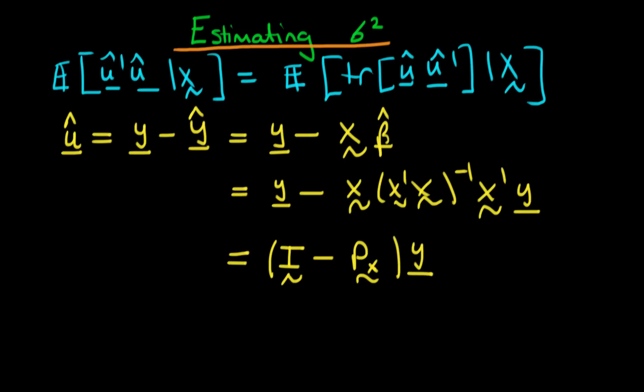If you remember from our videos on the geometric discussion of least squares, this term in the parenthesis is the orthogonal projection matrix to the column space which is orthogonal to the columns of x. From now on I'll refer to this matrix as Mx, so this equals Mx times y.